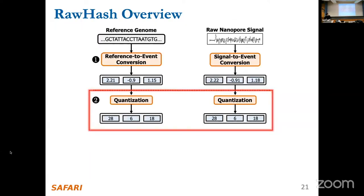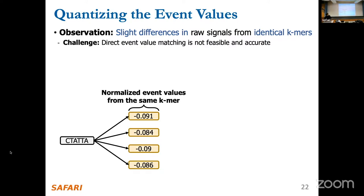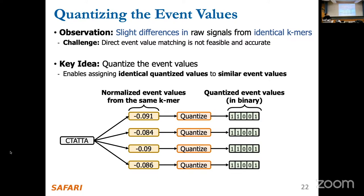Can we now directly match these events between the reference genome and the signal? The answer is no. Our observation is that there are slight differences in raw signals from identical k-mers due to noise from the nanopore sequencer. So we cannot directly match event values — we would not find many matches due to these variations. The key idea is to quantize these event values so that similar event values receive the same quantized value. This is essentially a simple bucketing idea to reduce values into a smaller set.